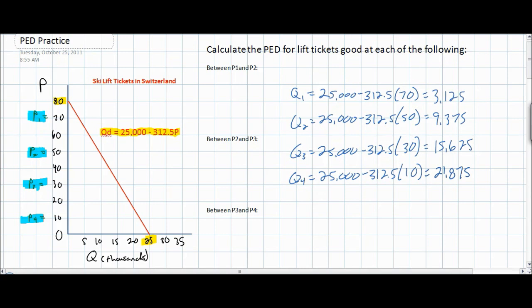Now we know four different quantities that correspond with the four prices on our graph. We can apply these quantities to our PED formula and find the percent change in quantity between P1 and P2, between P2 and P3, and between P3 and P4. Then we'll have the price elasticities of demand for ski lift tickets at a range of prices from 70 francs to 10 francs. Let's plug these numbers into the PED equation now.